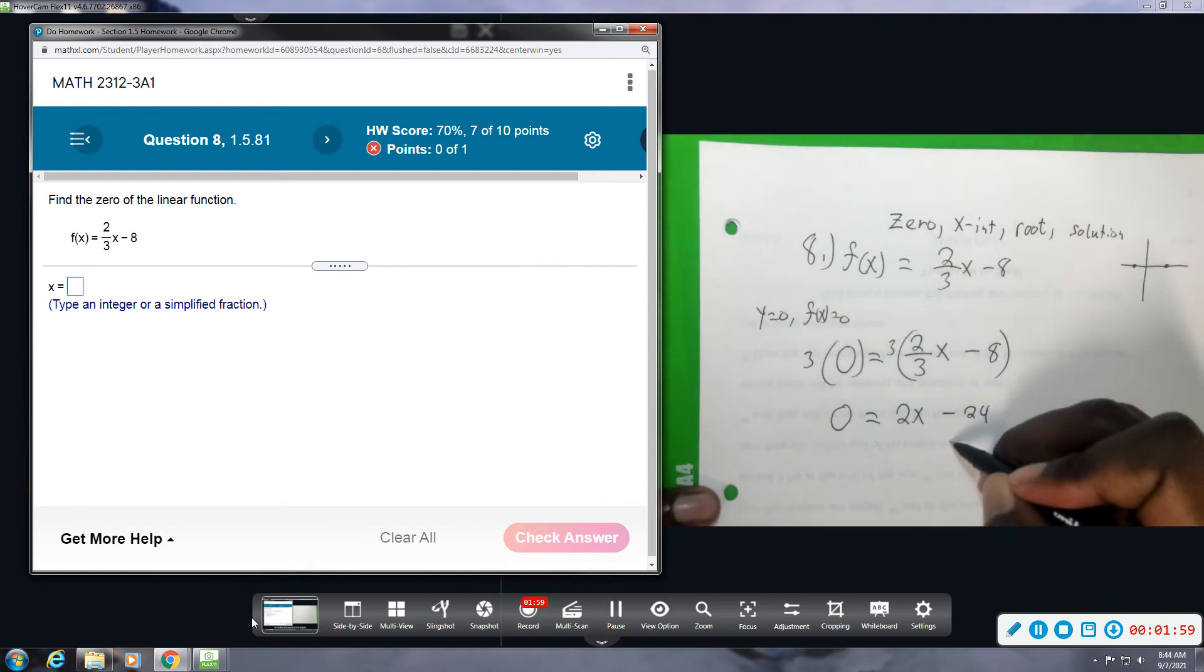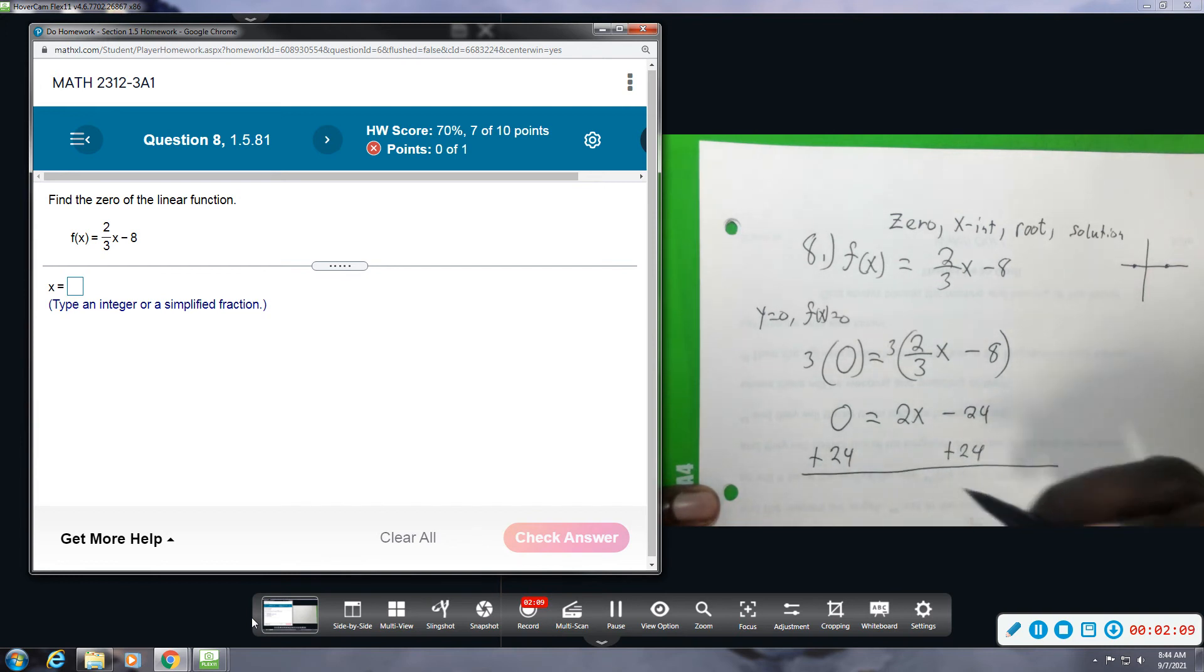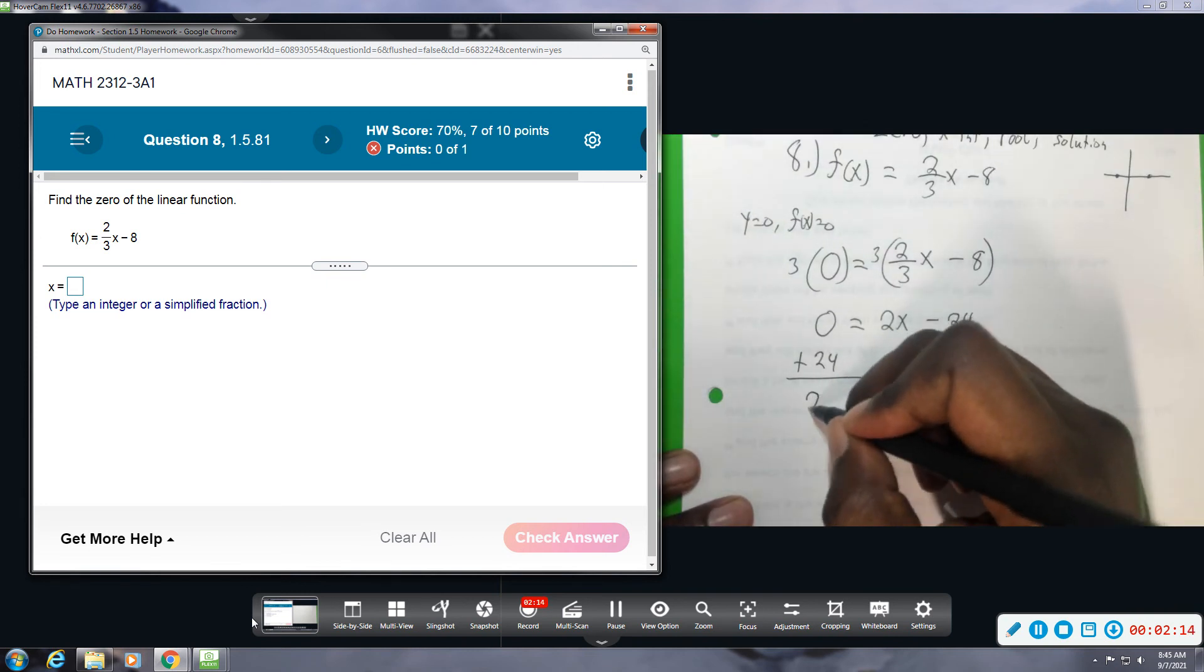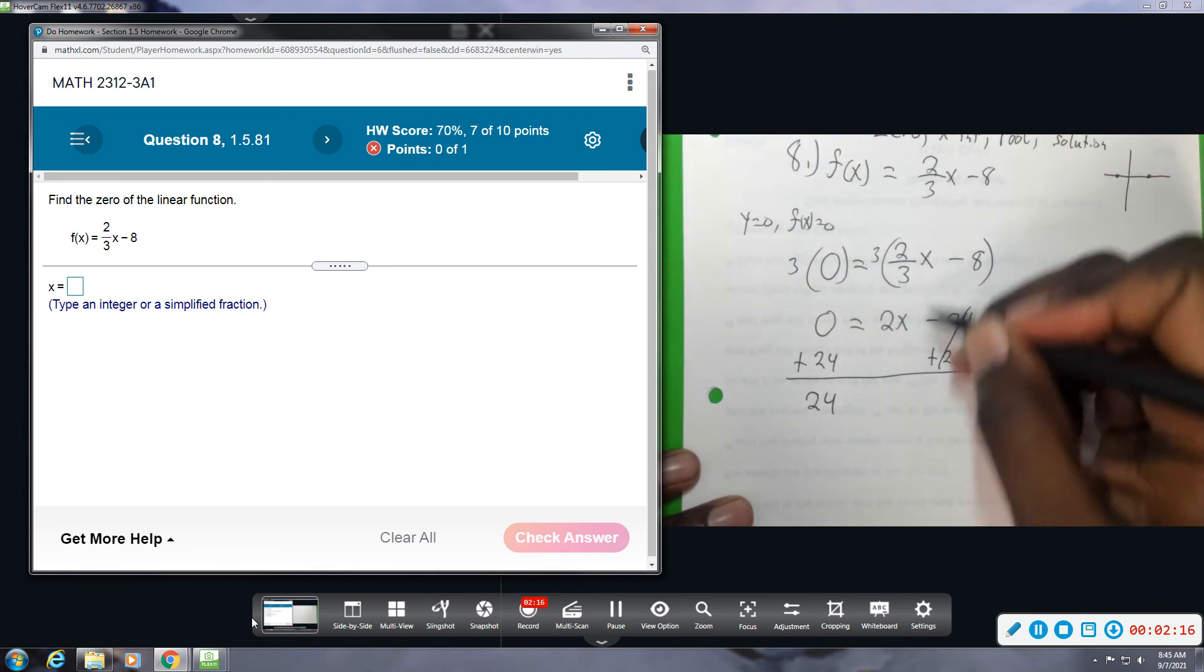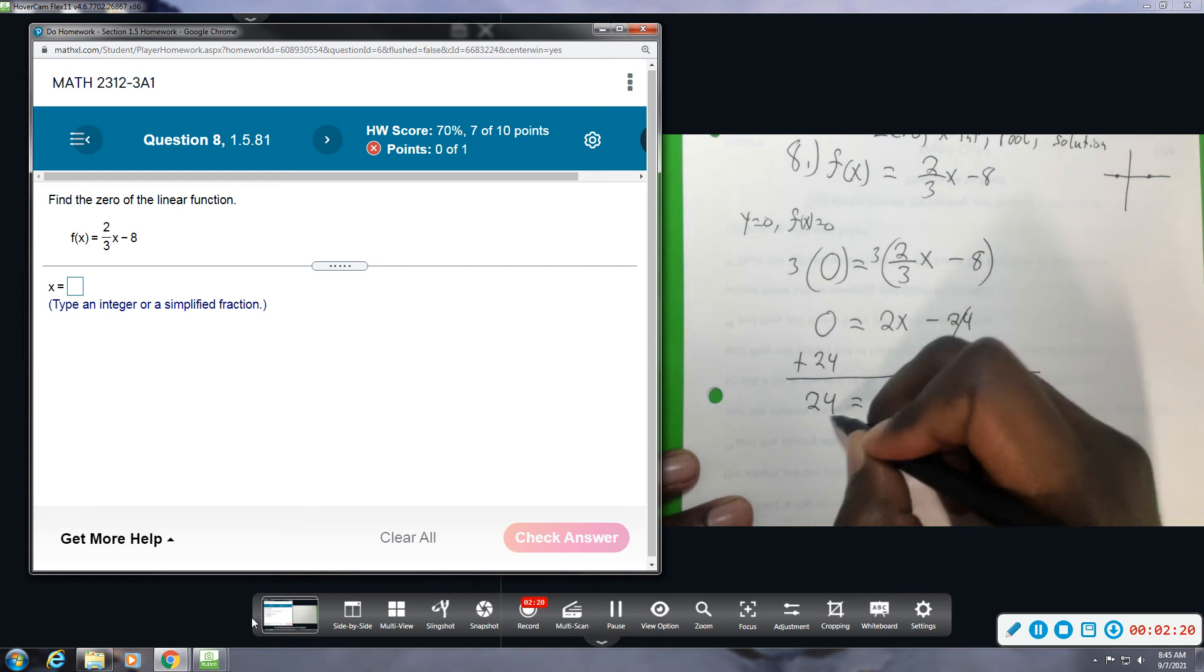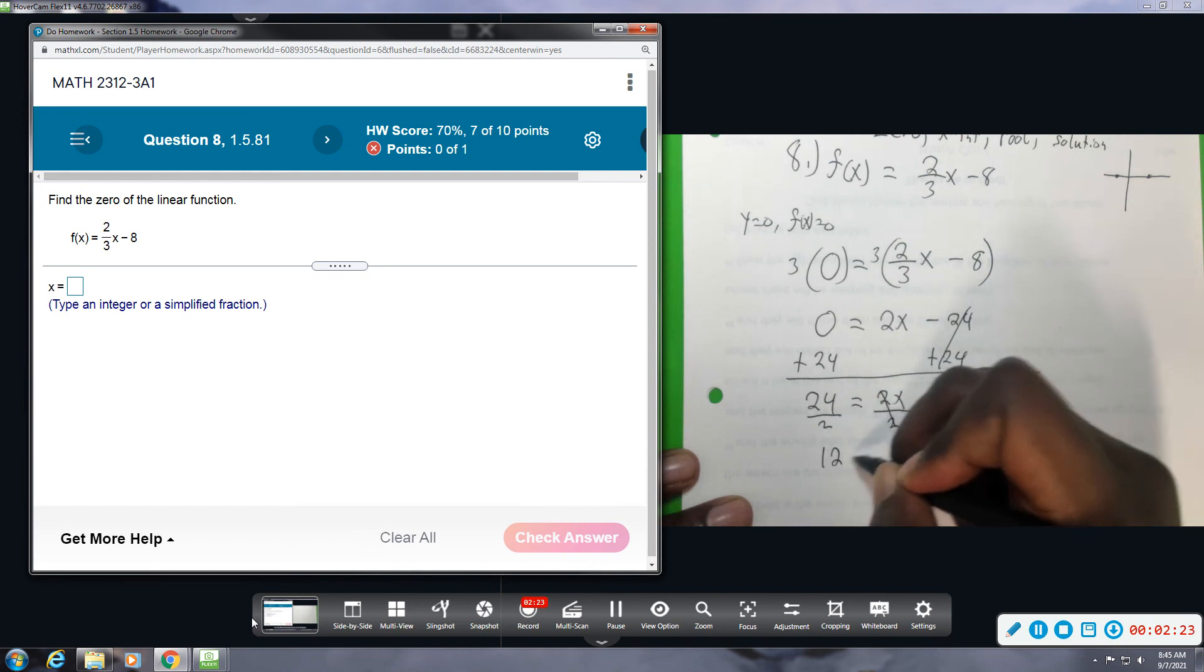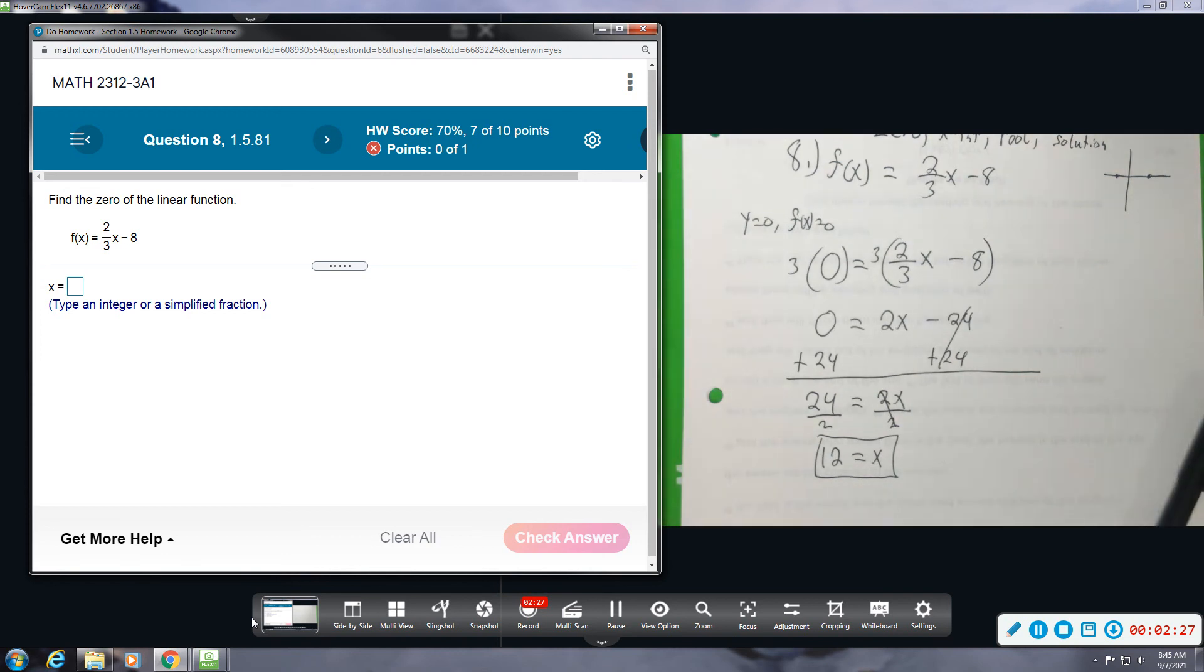From here, we're going to add 24 to both sides. And this time I move the 24 because I like to leave my x positive, so I move the number instead of x this time. And then that leaves me with 24 equals 2x. And then divide by 2, and we get that 12 is equal to x. So this will be my zero this time: x equals 12.